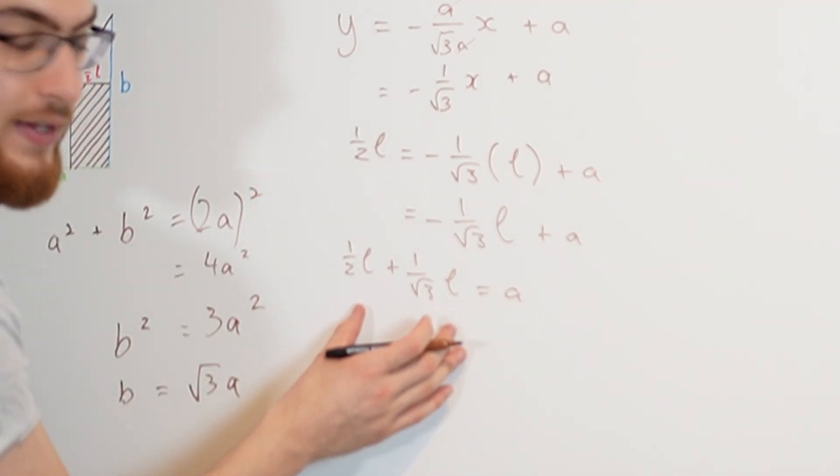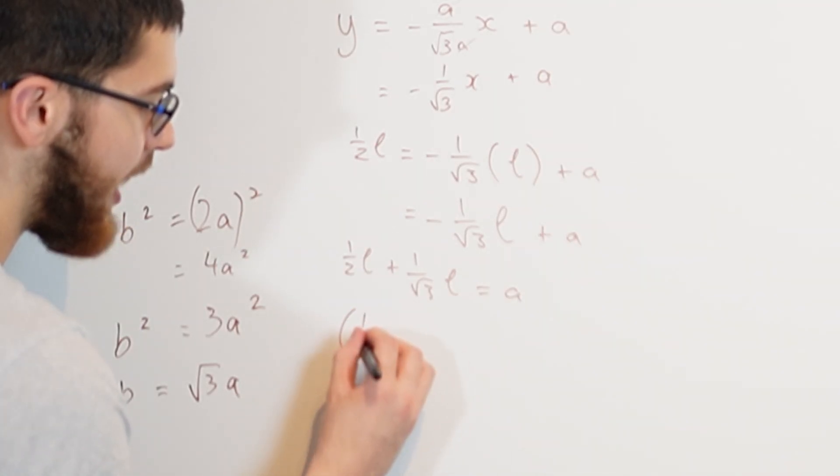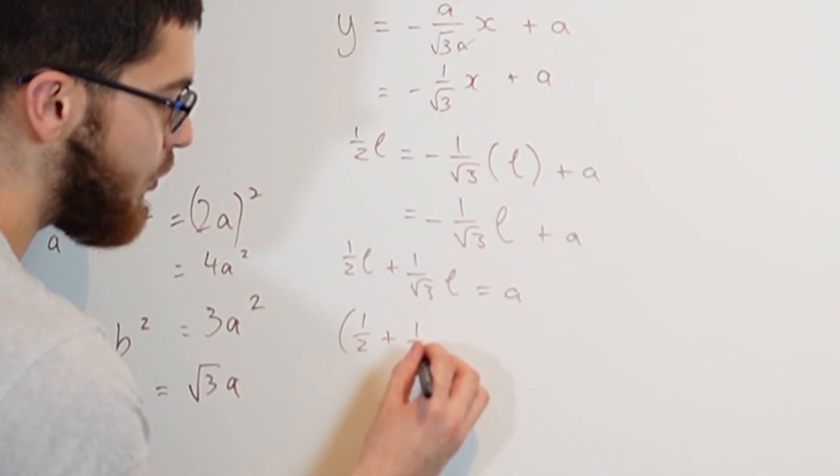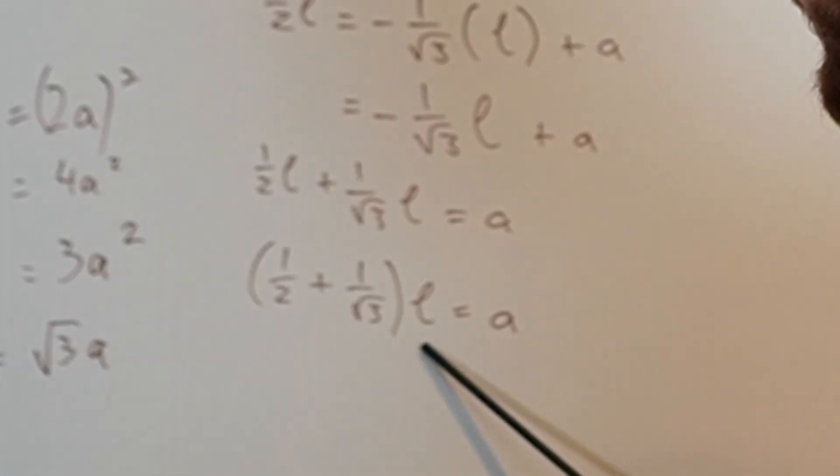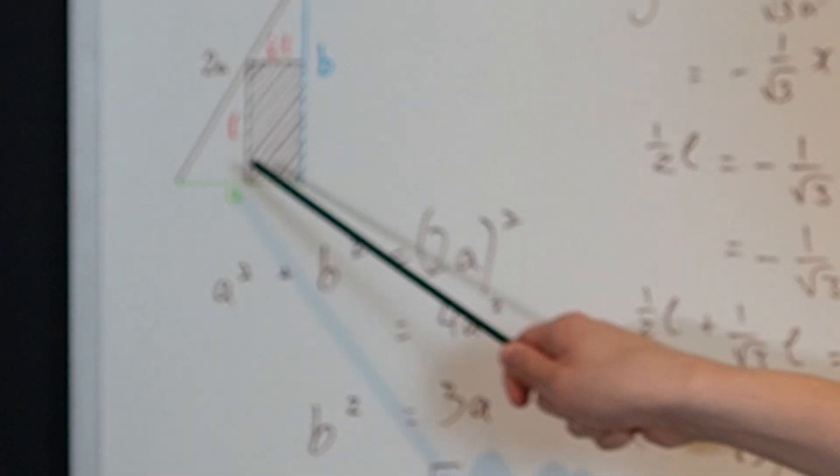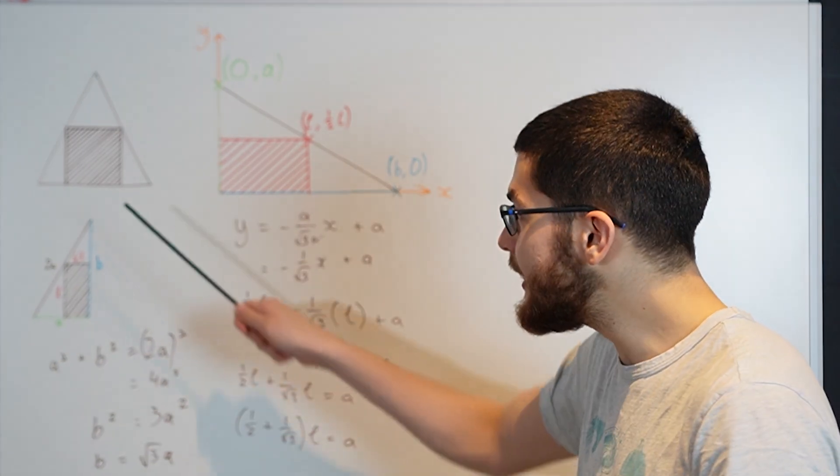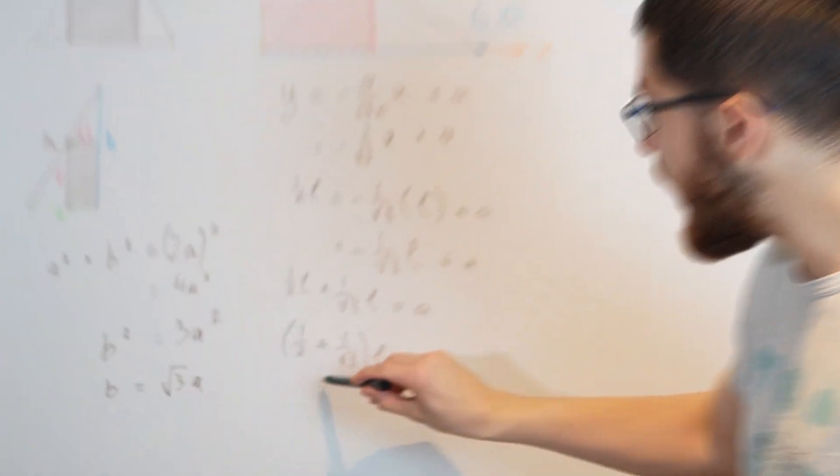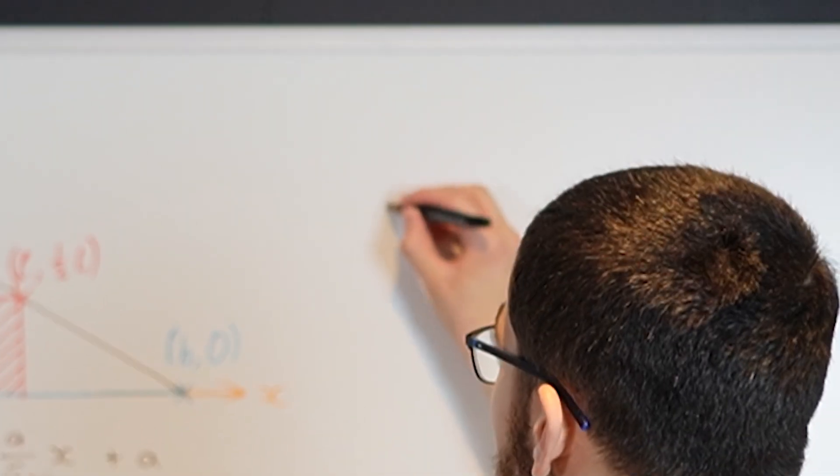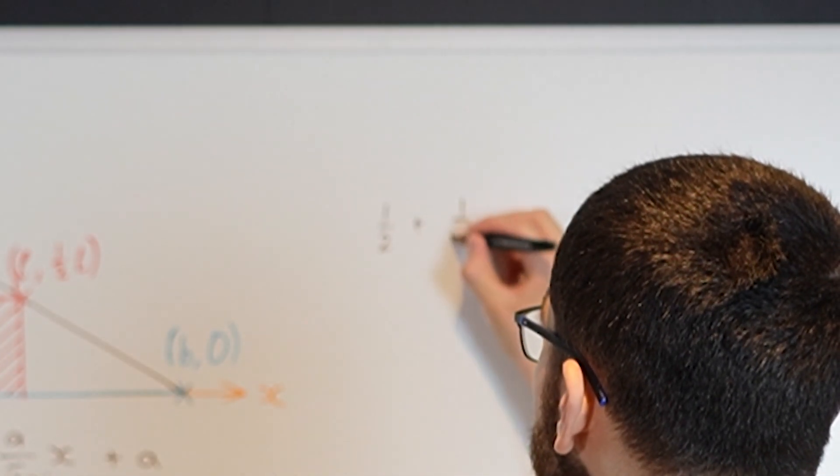And then we can group this together, factoring out the L. So we get 1 over 2 plus 1 over root 3 of L equals A. Now we want to find L in terms of A because if we can find L, then we can square it and get the area of the square.